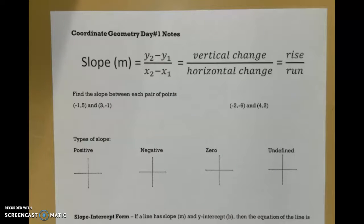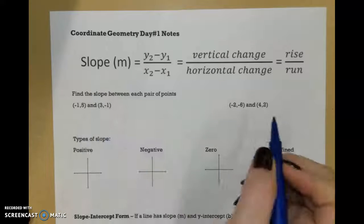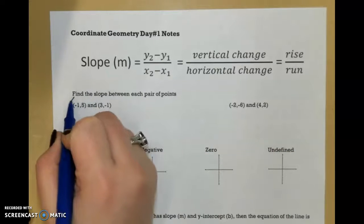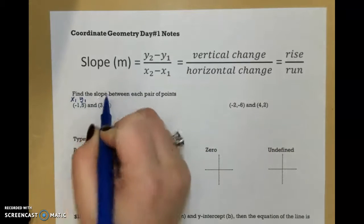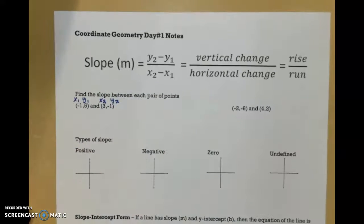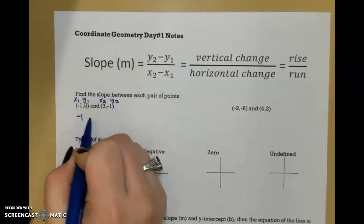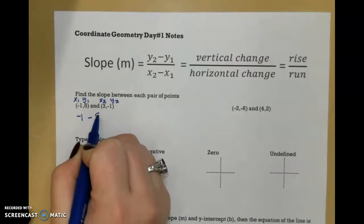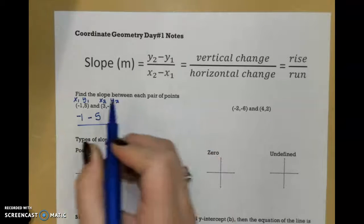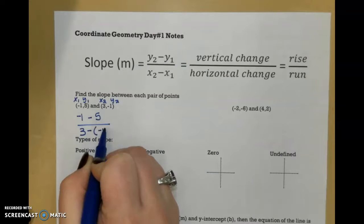So let's practice that really quick. If I'm given the points negative 1, 5 and 3, negative 1, I'm going to label these x1, y1 and x2, y2 to make it easier for myself to plug into our equation. So y2 is negative 1 minus y1 is 5, over x2 minus x1.